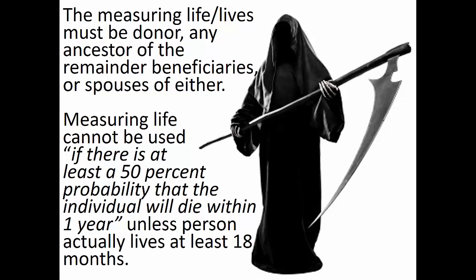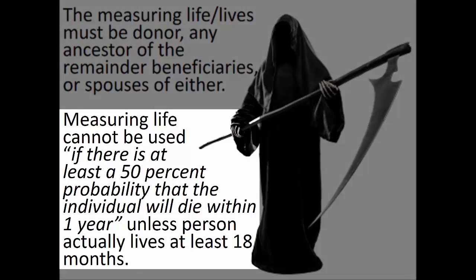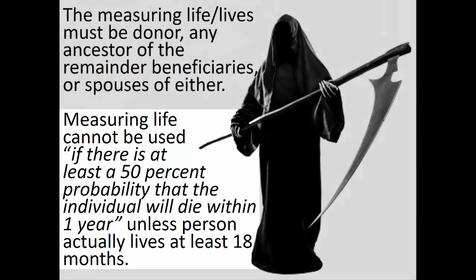Additionally, a person may not be used as the measuring life for a charitable lead trust if there is at least a 50% probability that the individual will die within one year. Such a probability would be an issue of fact and subject to expert testimony. However, if the person who is the measuring life actually lives for at least 18 months after being named, then there is no requirement to meet that 50% probability test.